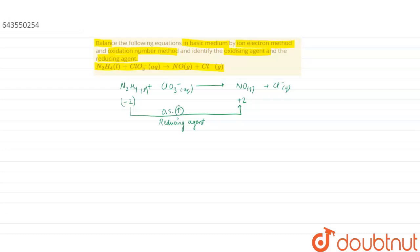Now when we see the oxidation state of chlorine in ClO3⁻: x + 3(-2) + (-1) = 0, which comes out to be +5. And in Cl⁻ the oxidation state is -1. The oxidation state is decreasing, so ClO3⁻ is an oxidizing agent.